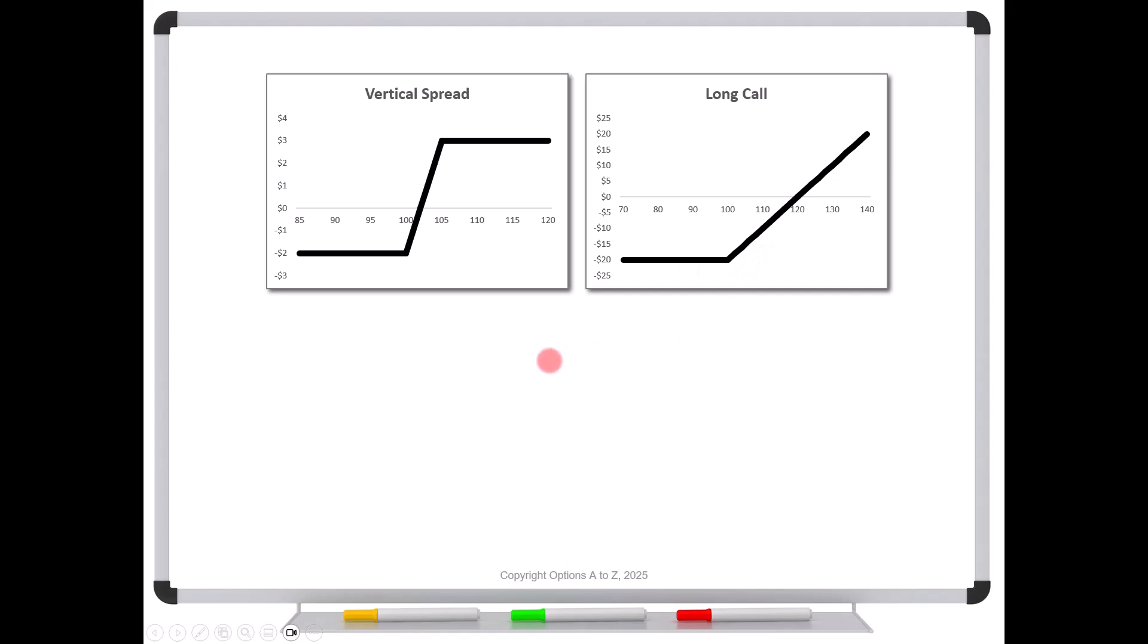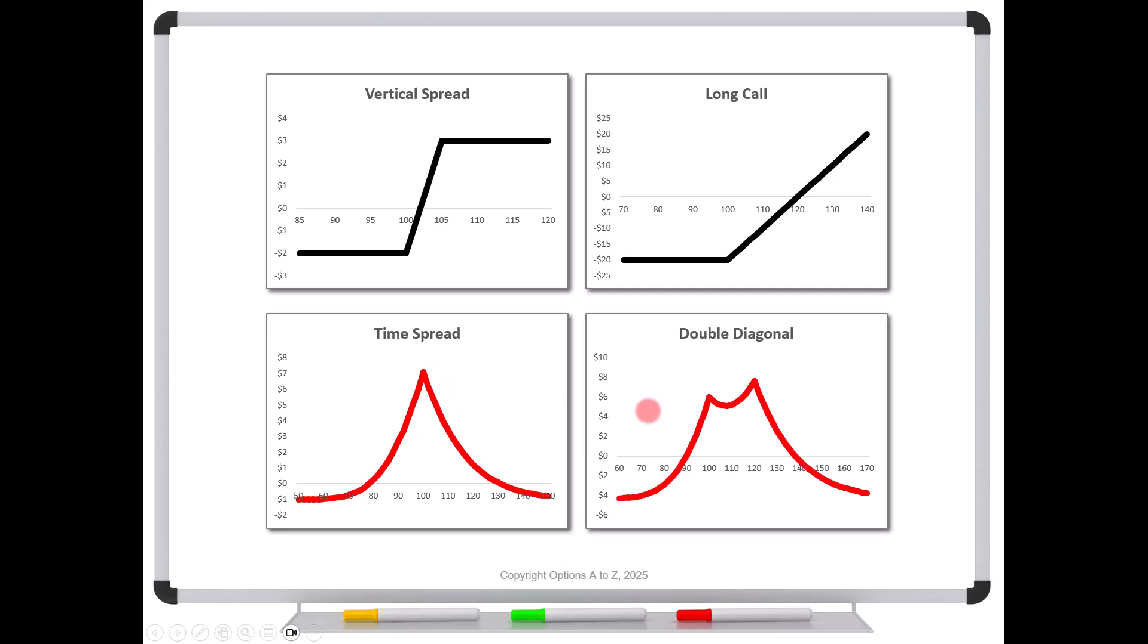But now let's look at the time spread. See, now we've got these curved lines, even though it's going to say this is an expiration graph. And again, you need to realize you've got multiple expirations here. That's what's causing the curvature. What if you look at something like a double calendar or a double diagonal? Now you're going to get something like this. And you can tell by looking at this, we are dealing with different expiration dates. Why? Because we don't have straight lines.